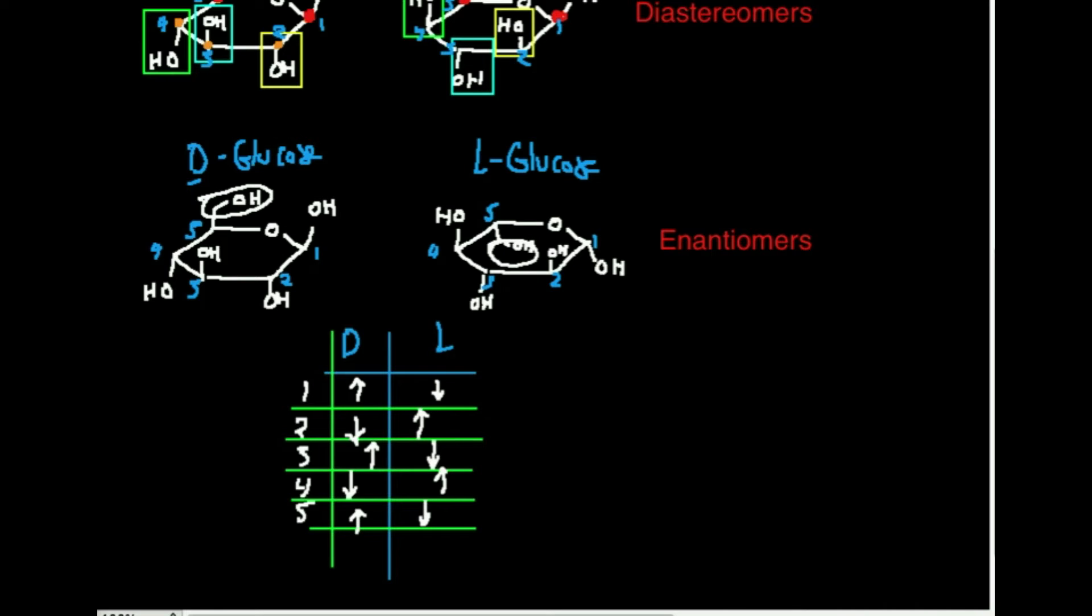So you have up, down. Down, up. Up, down. Down, up. Up, down. Every one of those positions, 1, 2, 3, 4, and 5, is the opposite between these two structures. If every one of the stereogenic centers, every one of those chiral carbons, if every one of them is flipped, then these two are enantiomers of each other.